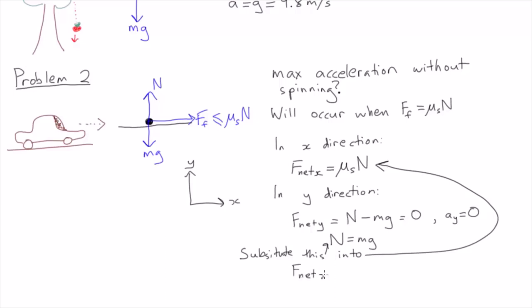in the x direction, Fnet = ma, and find that the maximum possible acceleration of the car, without spinning the tyres, is equal to μs·g.